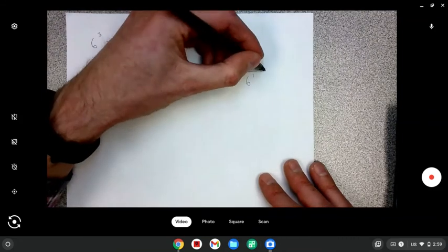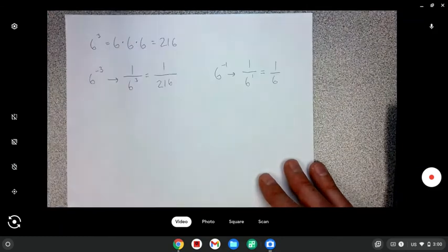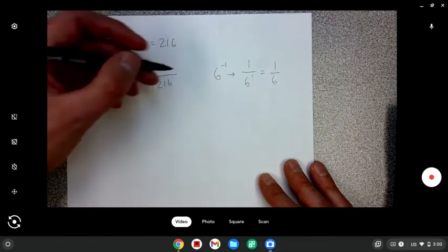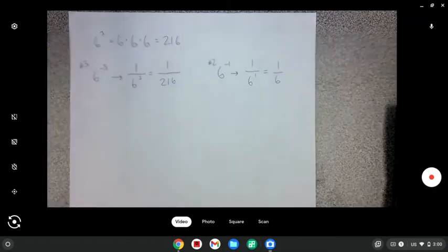Six to the one power means we just have one six. One over six. So this is number two. And this is number three, I believe, in Odysseyware.